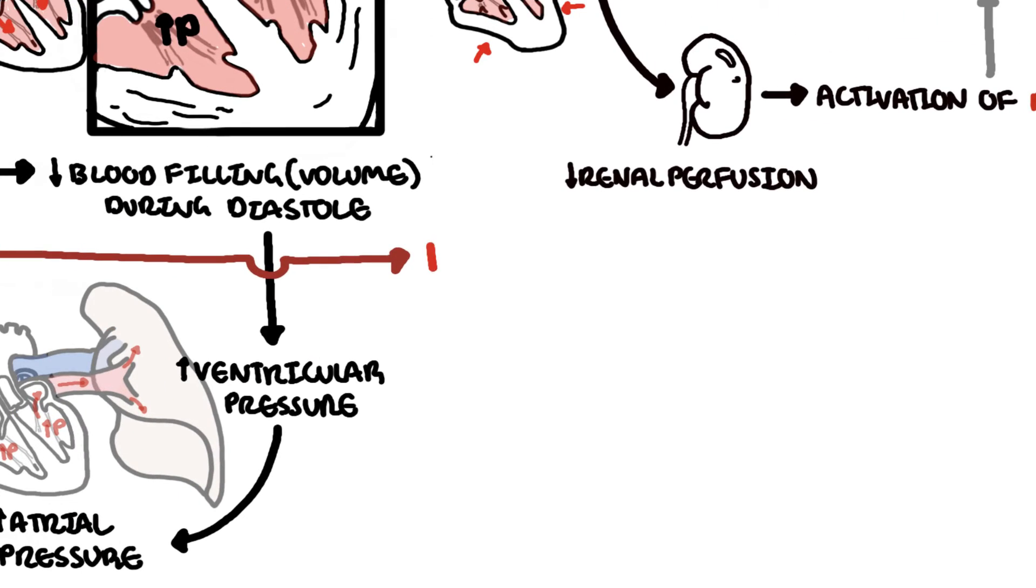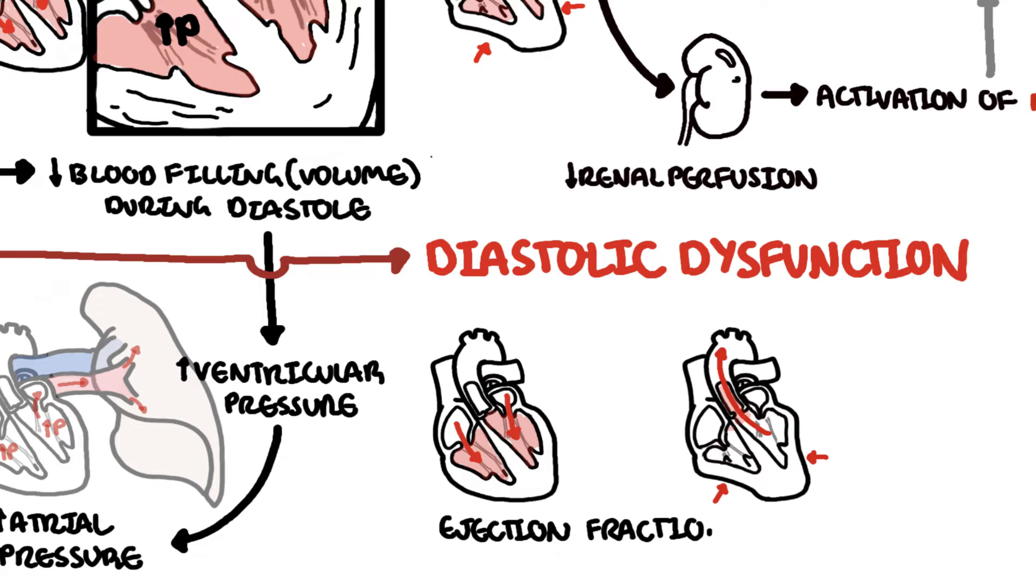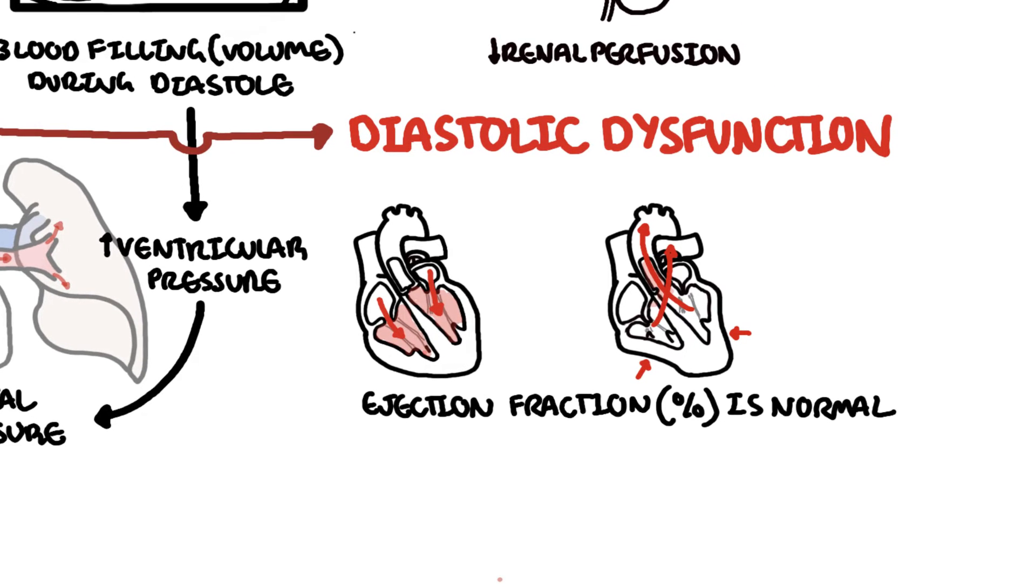Overall, there is diastolic dysfunction, reduced volume of blood in the ventricles, and therefore overall reduced stroke volume and cardiac output. However, the ejection fraction, which is the percentage of blood volume ejected by the heart during each cardiac cycle, is normal. And this is because the heart is still able to pump the small volume of blood during systole. Hence why this heart failure is called heart failure with preserved ejection fraction.